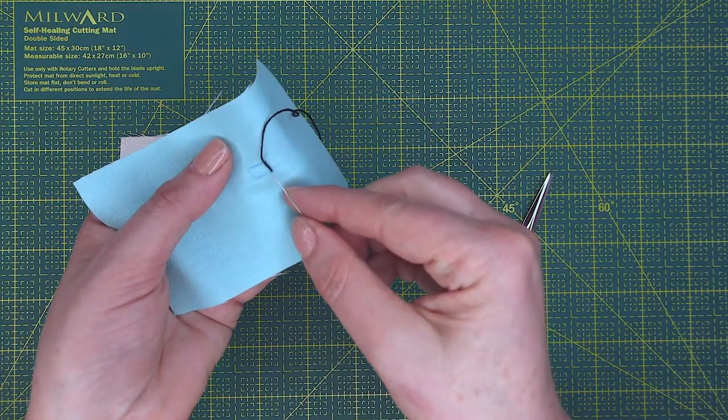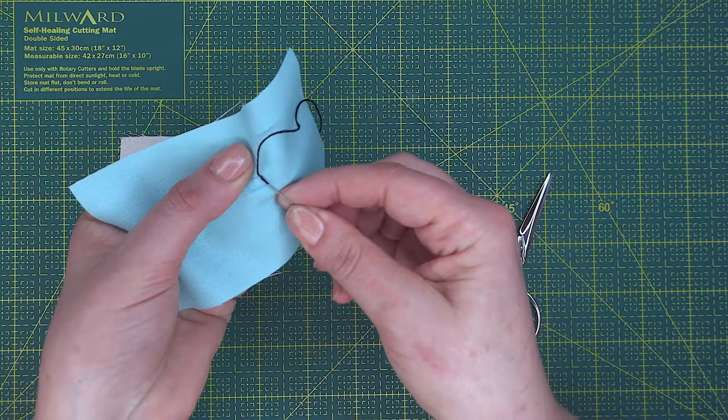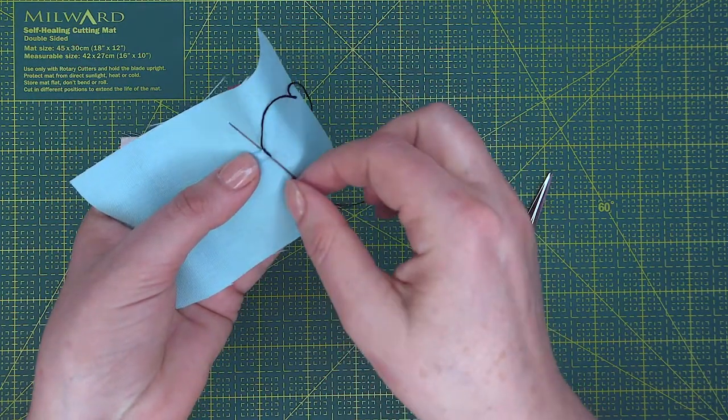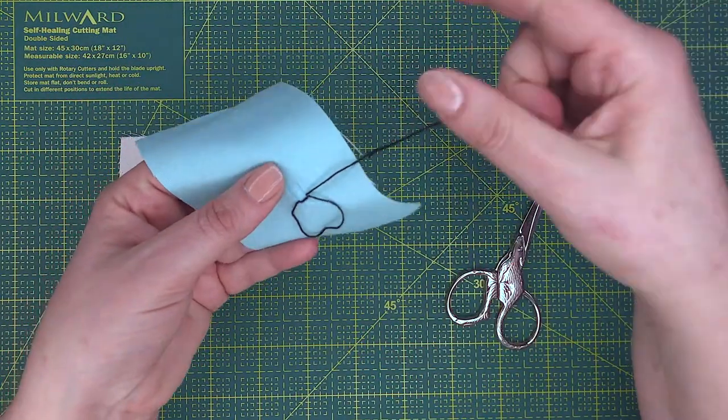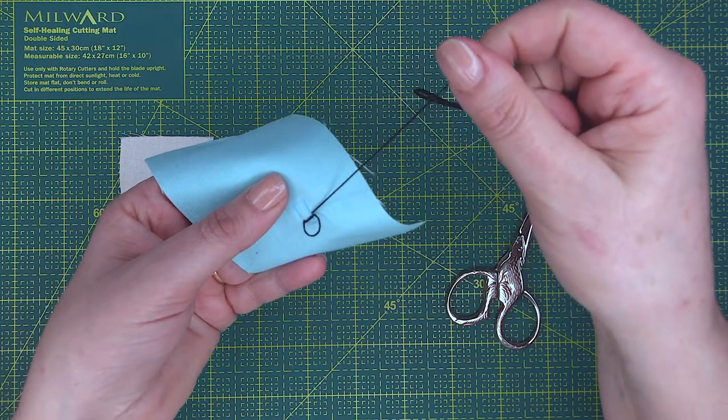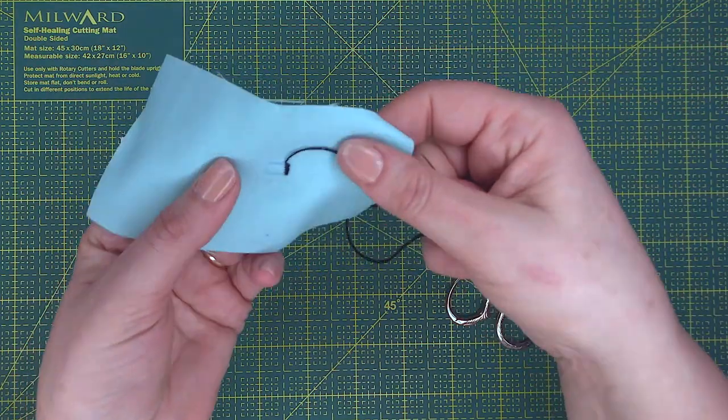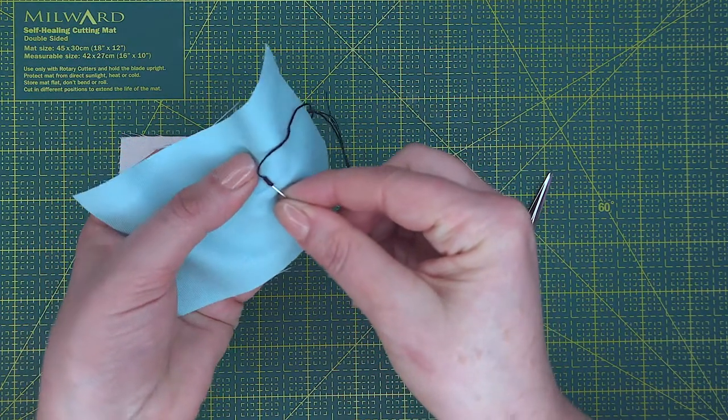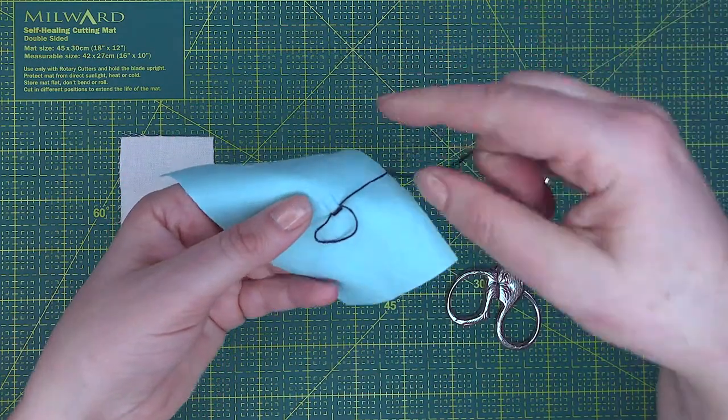You go again across and you work the needle to come out as close as to where you came out the last time, because what you're basically doing is you're filling the space with the embroidery thread. Now we work down to the next one, again coming out over as you can see.